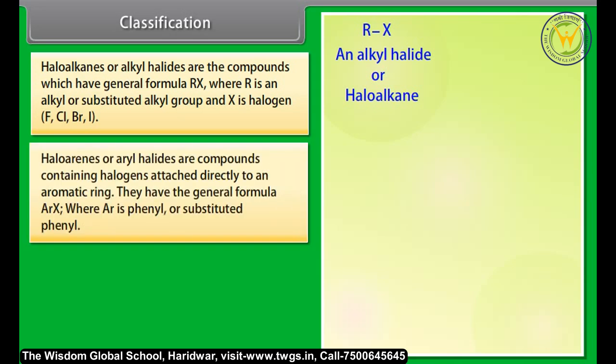Aryl halides are compounds containing halogens attached directly to an aromatic ring. They have the general formula ArX, where Ar is phenyl or a substituted phenyl group.